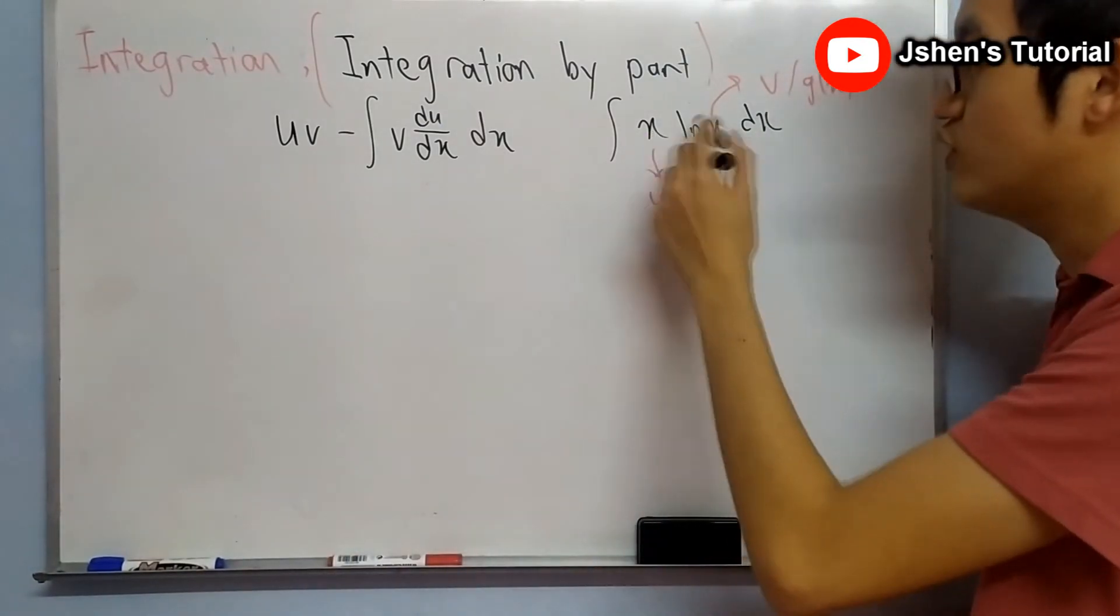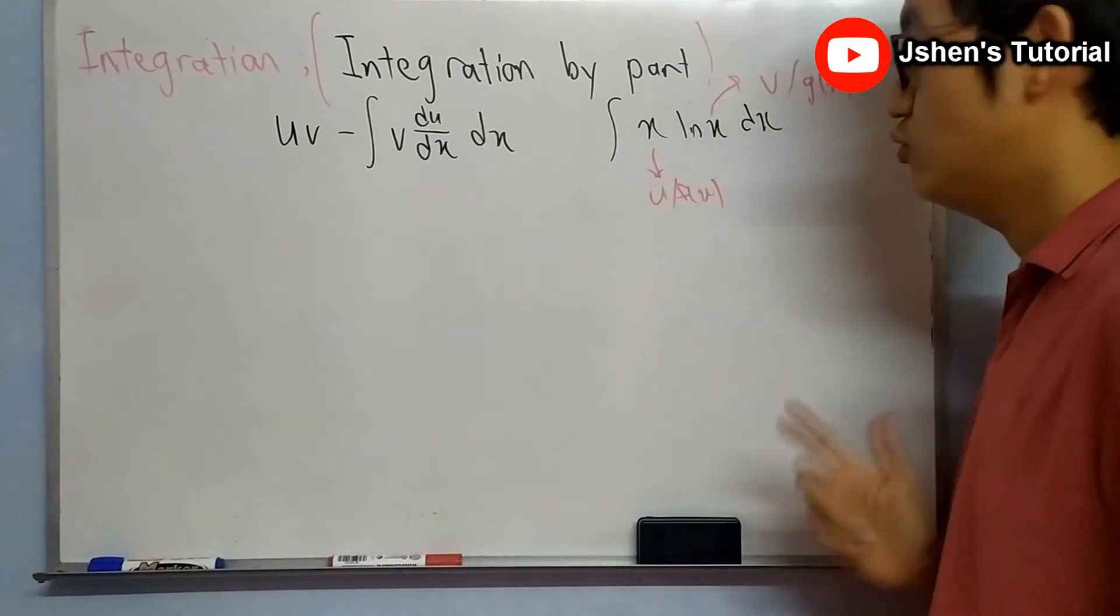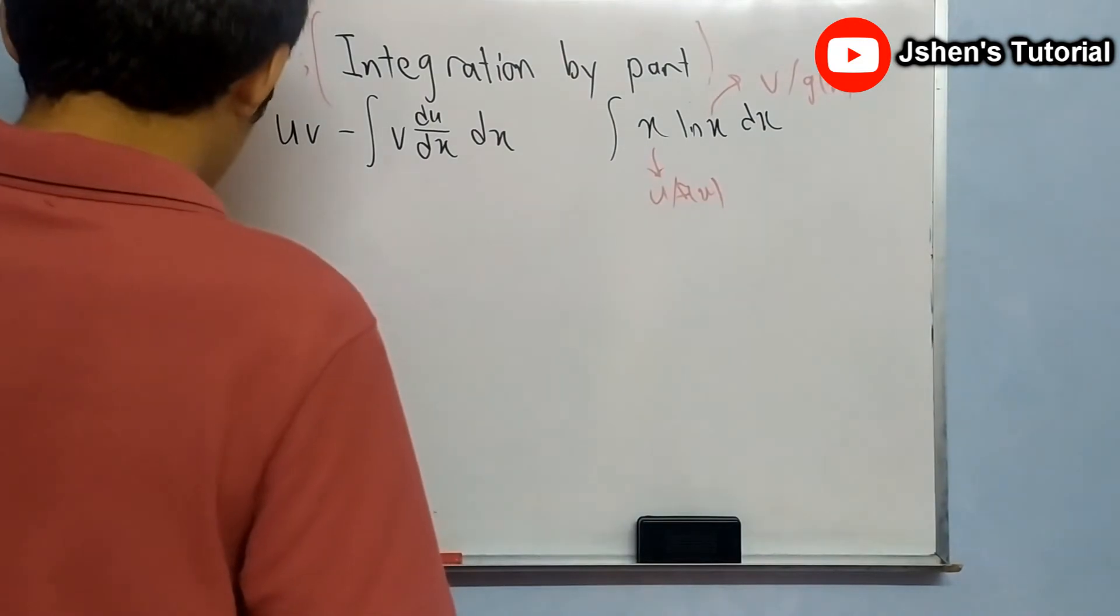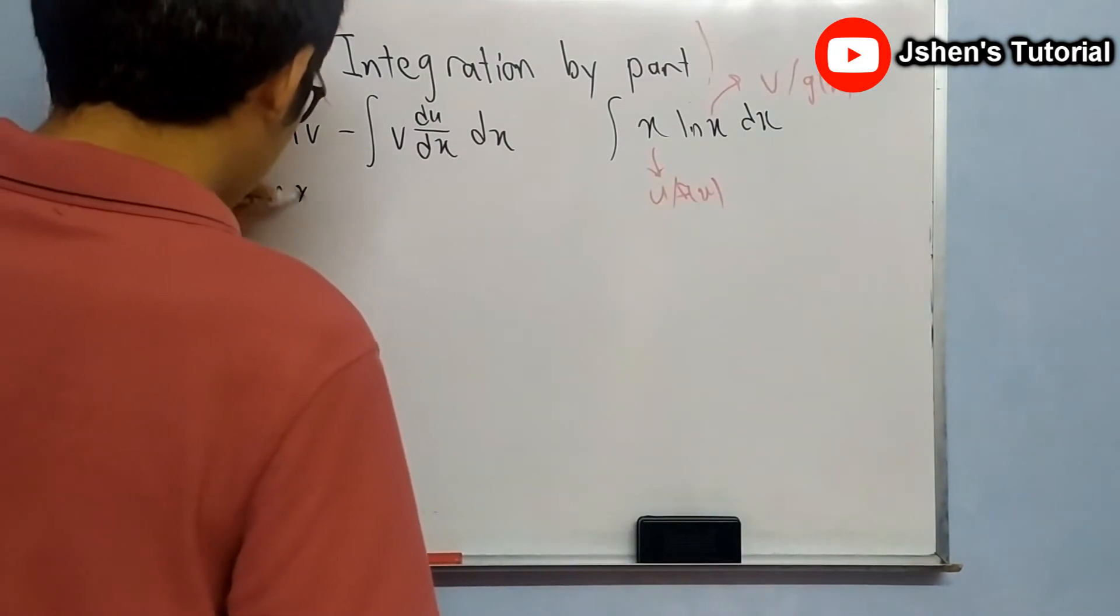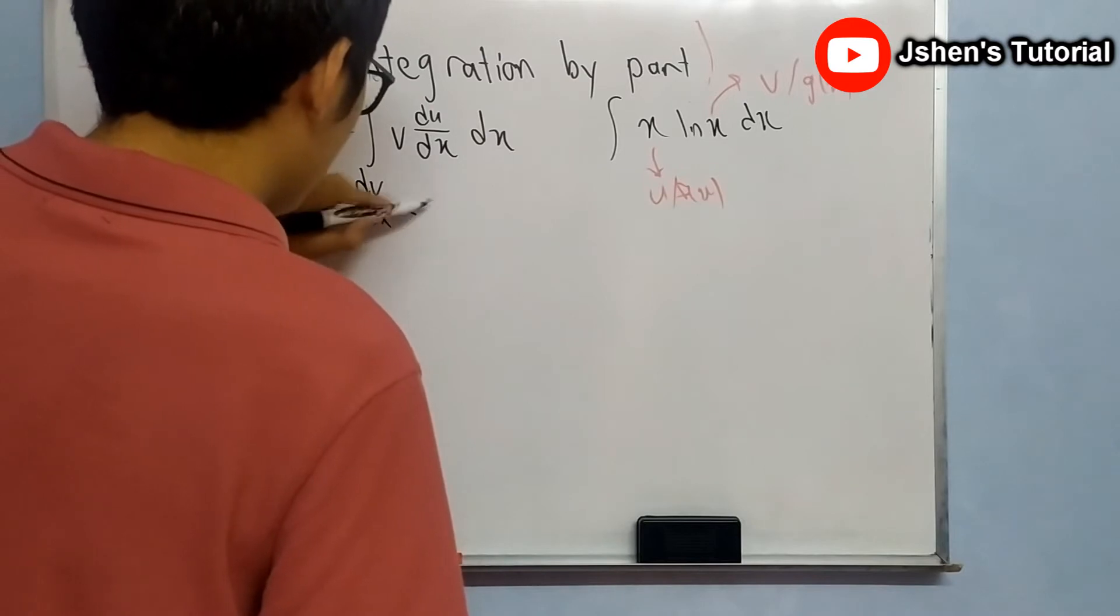Now I'm going to split which one is u and which one is v. For this, I'm going to give priority to ln x. So u will become ln x while dv/dx will become x.